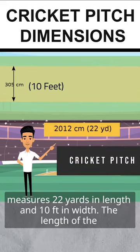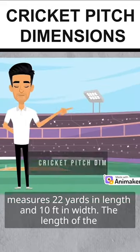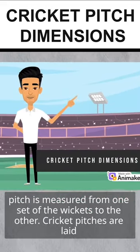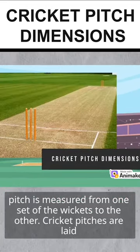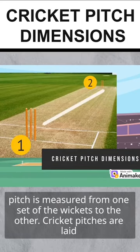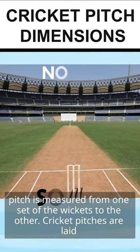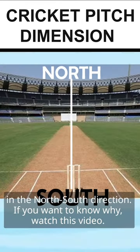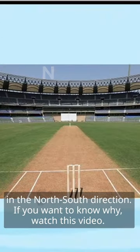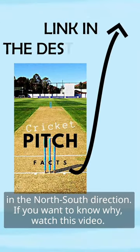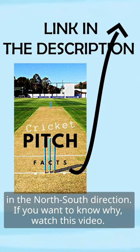It measures 22 yards in length and 10 feet in width. The length of the pitch is measured from one set of wickets to the other. Cricket pitches are laid in the north-south direction. If you want to know why, watch this video.